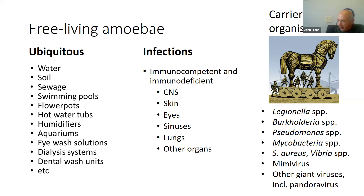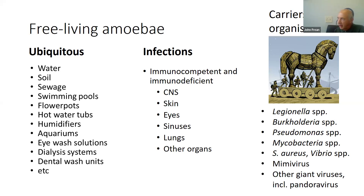These infections occur both in immunocompetent and immunodeficient individuals, and a variety of organ systems are involved. One interesting aspect of free-living amoebae is that they are phagocytes — they feed on other microorganisms: bacteria, fungi, algae. But they also host them in their interior.